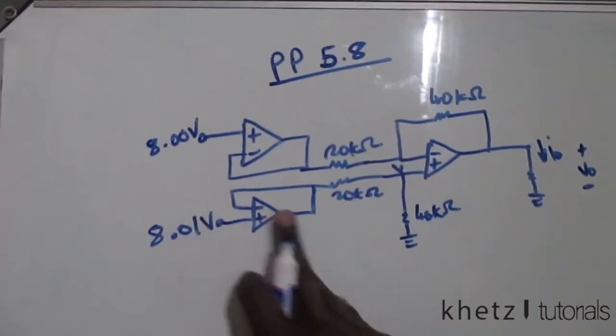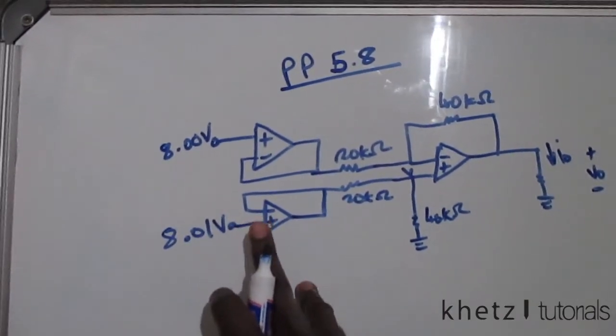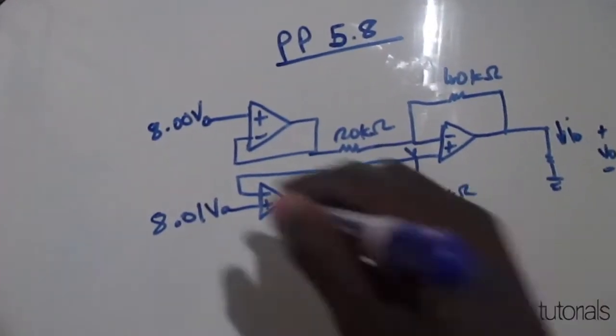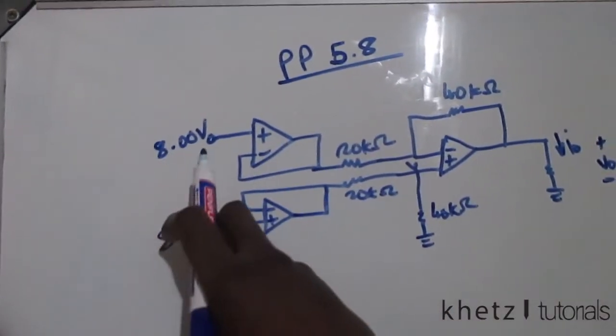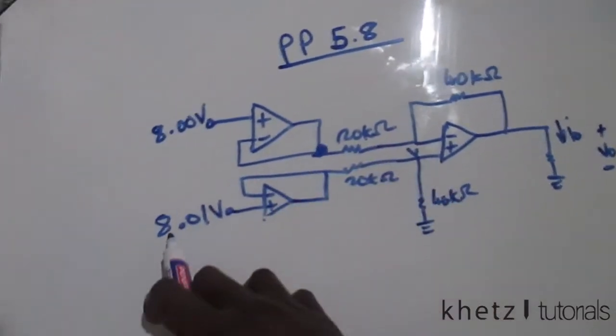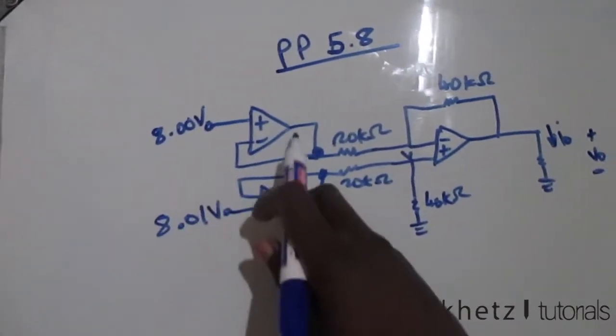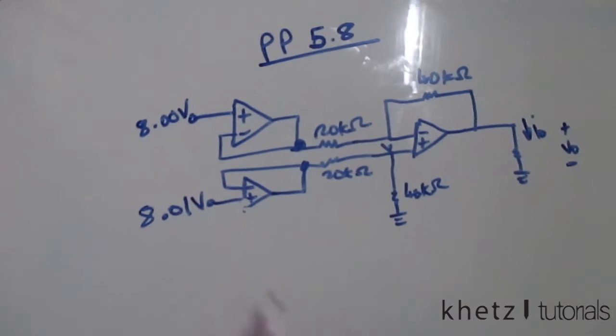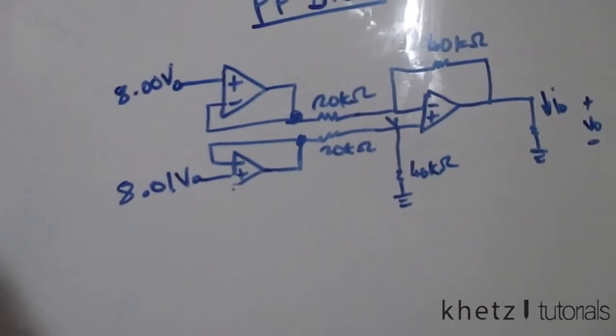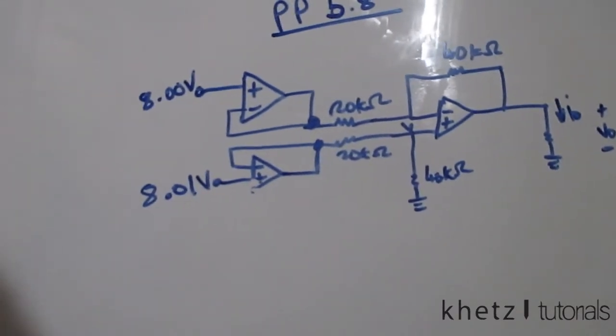have an op-amp with basically nothing connected to it and just wires straight from the inputs or the terminals to the output. What these do is they basically propagate whatever voltage they receive. So this 8 volts is the same as that, and this 8.01 volts is the same as that. All this is passed through the op-amps to this point. You can research what these buffers are used for, as their usefulness is not quite evident, but they are quite useful.